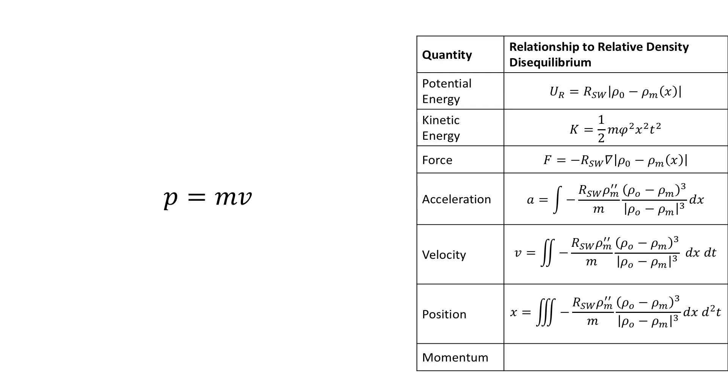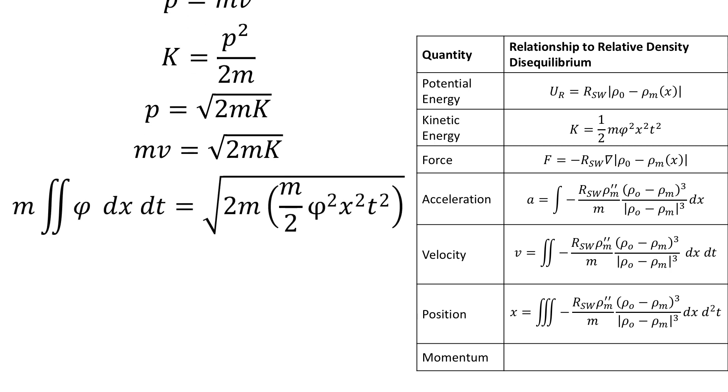Momentum is defined as p is equal to mv, and it's related to kinetic energy by the expression that K is equal to p squared over 2m, which we can rearrange for p as p is equal to the square root of 2mK. So we can set mv is equal to the root of 2mK, and we take the values we found in the above expression.